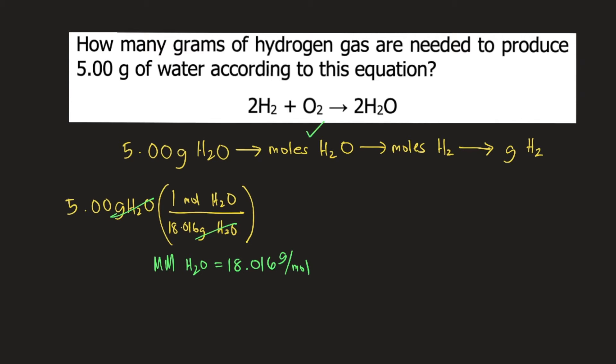Now how do you convert moles of water into moles of hydrogen gas? This is where we use our balanced chemical reaction. According to the balanced reaction, 2 moles of water requires 2 moles of hydrogen gas.